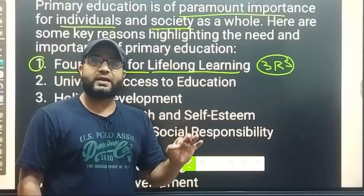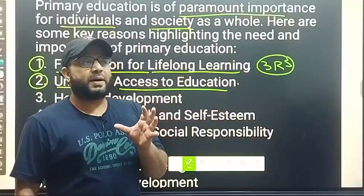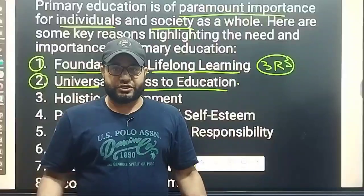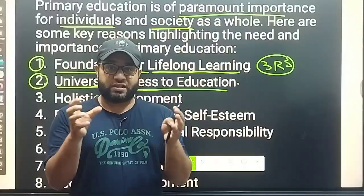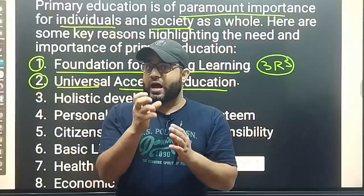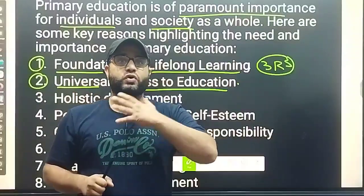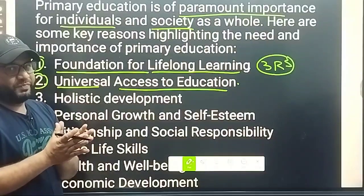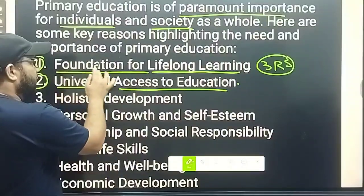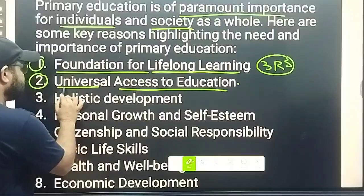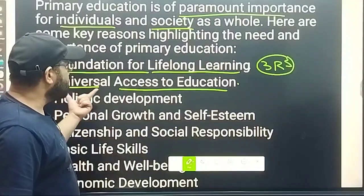I hope point number one is clear. Number next point is universal access to education. आए दिन आप हमारे constitution में देखते हो right to education. या अगर आप basic education की बात करोगे - Gandhian system of education, या Kothari Commission की बात करोगे - बहुत सारे ऐसे commissions हैं जो कहते हैं कि education को universalize करो. एक scheme है Sarva Shiksha Abhiyan - education for all - 6 to 14 years तक जितने भी बच्चे हैं उनको universalize करो. So primary education is the step by which we can universalize access to education - this is what we call universalization of education.